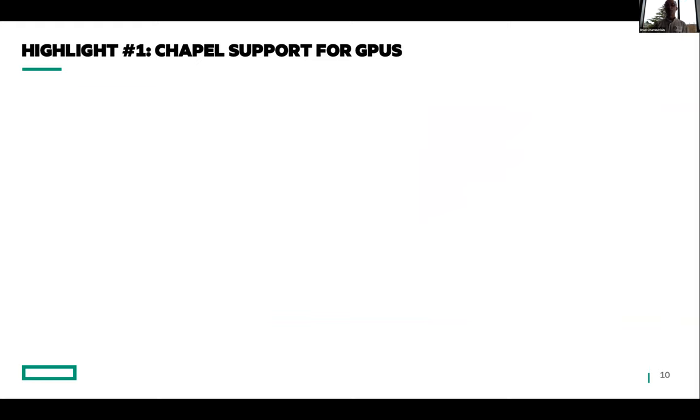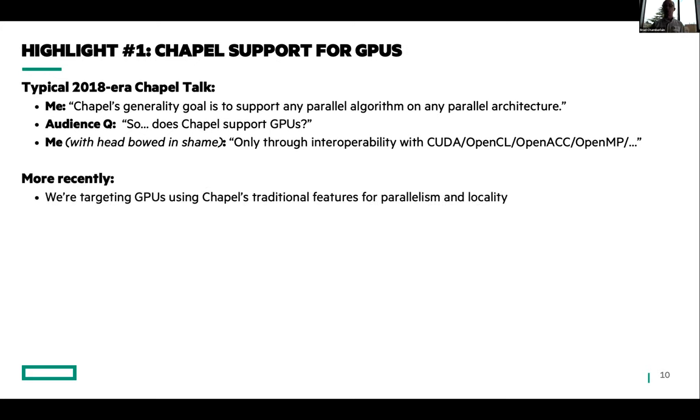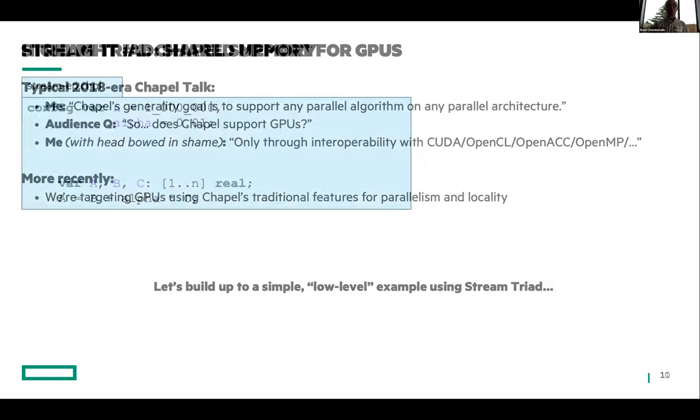The first highlight is Chapel support for GPUs. So around the time of our last workshop, a common thing that would come up in my talks is I would say the same thing I said to you about any parallel algorithm on any parallel hardware. And at that time, GPUs were just starting to become a big thing on HPC systems. So the obvious question was, does Chapel support GPUs? And I'd have to very embarrassingly say, well, you can interoperate with conventional models and call out to them, but no, not directly in Chapel, which of course was not part of that goal. So more recently, we are targeting GPUs using Chapel's traditional features for parallelism and locality—the same features we've had in the language all along. And I'm going to basically teach you a dangerous amount of Chapel and show you how we apply it to GPUs. And so this is going to be sort of your whirlwind introduction to the language.